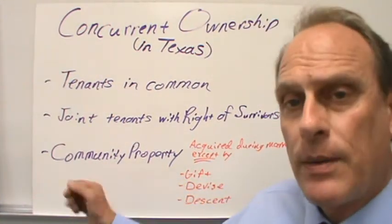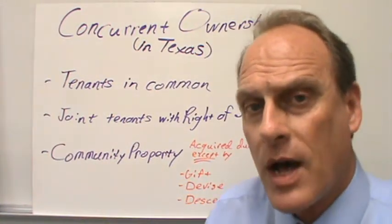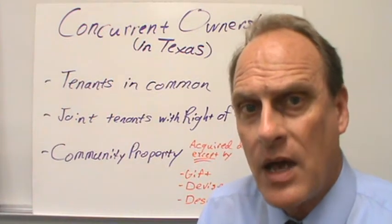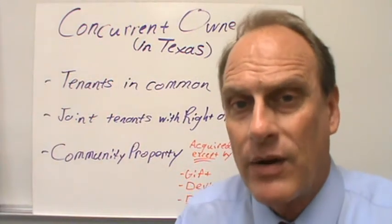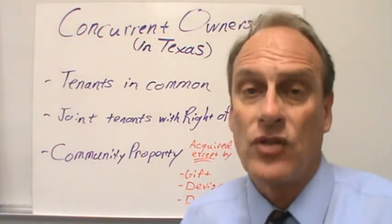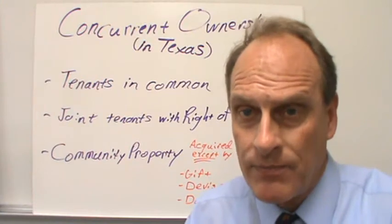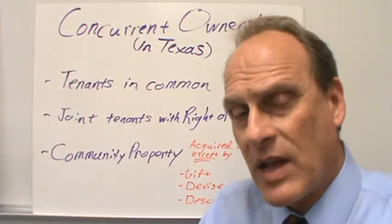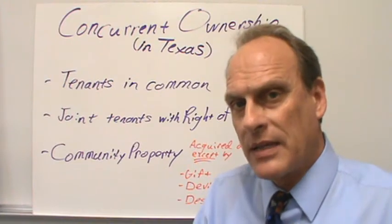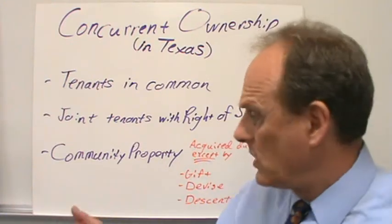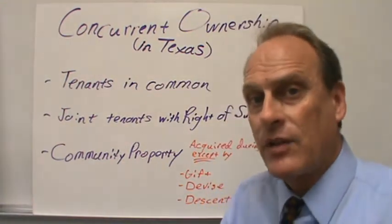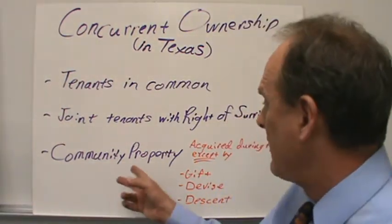Community property. In Texas, this is the way that married Texans hold their marital property — as community property. The community property system actually has two types of property in it. One is community property, where the spouses own the property together in one-half shares.